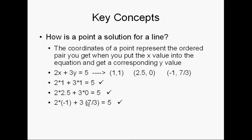3 times 7 thirds. Okay. 21 over 3 is 7. So, negative 2 plus 7 equals 5. Check. That is a solution.